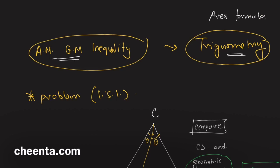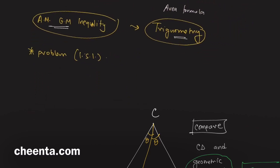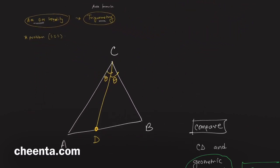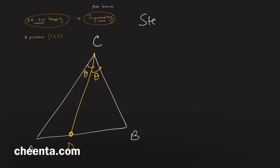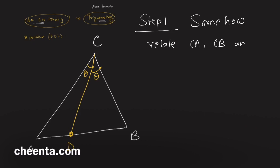Why don't you pause the video here and give this a try? Let's go into the first part of the problem. Step one: somehow relate CA, CB, and CD.